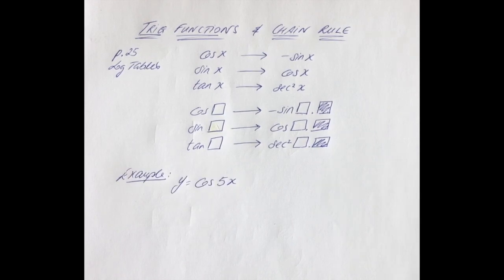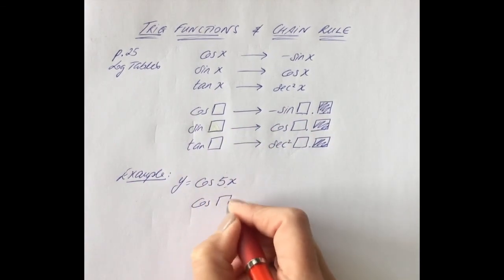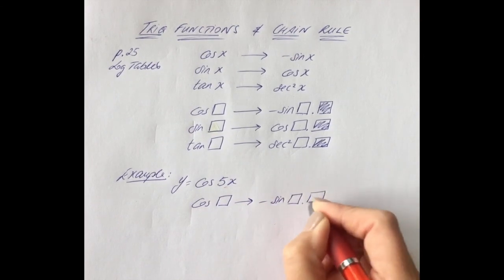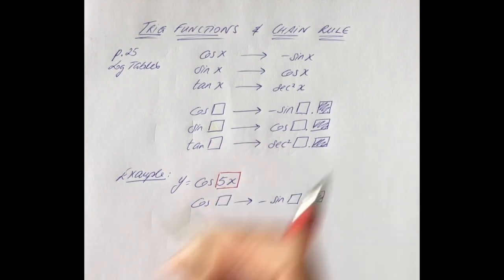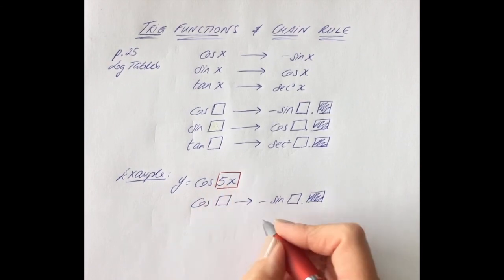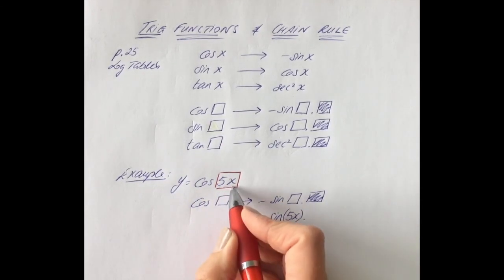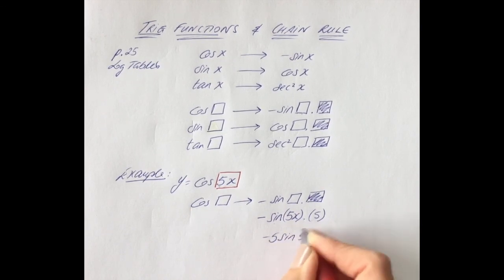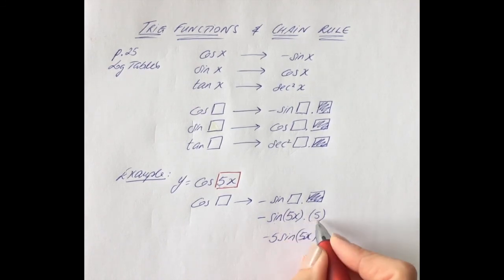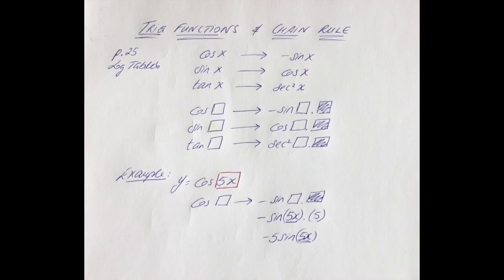Let's say you have y = cos(5x) and we want to differentiate it. Immediately, you see something more complicated than just an X, so get your chain rule boxes down. In the box we have 5x, so differentiating gives minus sine of 5x, times the differential of 5x, which is 5. That simplifies to minus 5 sin(5x). Remember, 5x is an angle — you cannot multiply the number into the angle; it stays with the sine. Your final answer is −5 sin(5x).